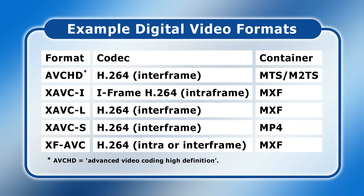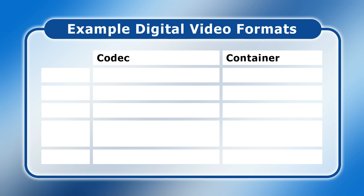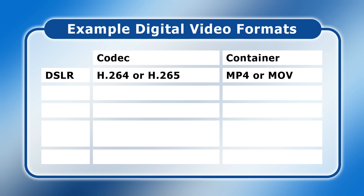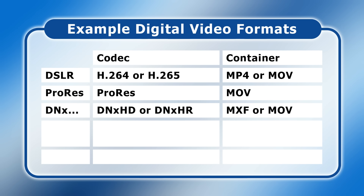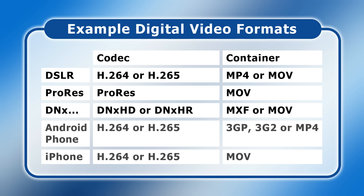Often, especially in the consumer arena, video formats are not given a name. For example, most DSLRs do not declare a format, but use an H.264 or H.265 codec with either an MP4 or MOV container. Similarly, video captured on cameras and recorders that use a ProRes codec is typically described as being in the ProRes format and stored in a MOV container, whilst DNxHD and DNxHR codec videos are usually placed in either an MXF or MOV file. Video shot on smartphones also doesn't have a named format, but is usually encoded with an H.264 or H.265 codec and stored in a 3GP, 3G2 or MP4 container on an Android device, or in a MOV container on an iPhone.